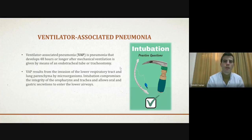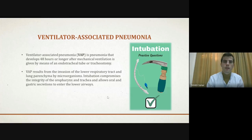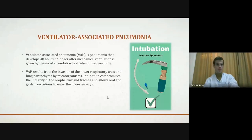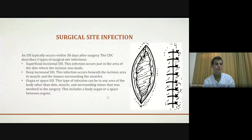When intubation is not possible, tracheostomy is performed — a surgical invasive penetration through the trachea rather than through the oral cavity, done when the normal airway is blocked. This extra invasive procedure increases the risk of both surgical site infection and ventilator-associated pneumonia. Regarding SSI: 15% of adults carry Staphylococcus aureus in the nasal cavity, making it the most widespread pathogen in all healthcare-associated infections.